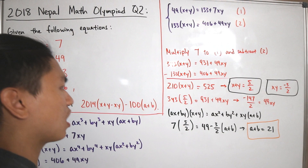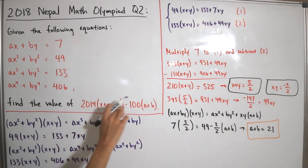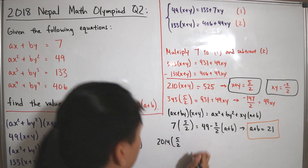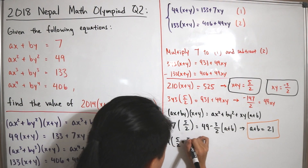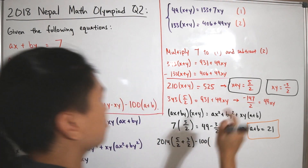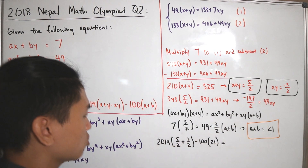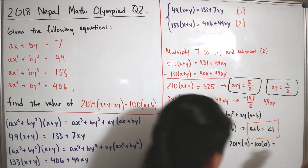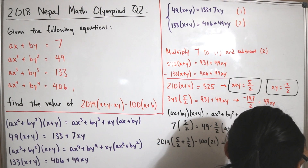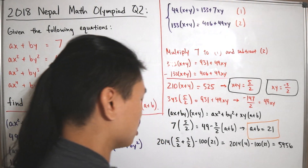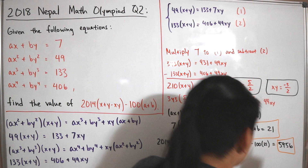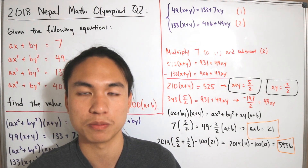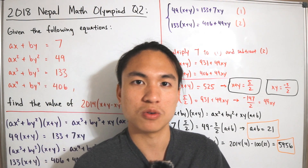Now we have all three values: x + y = 5/2, xy = -3/2, and a + b = 21. Plugging into the expression: 2014(5/2 - (-3/2)) - 100(21) = 2014 × (8/2) - 2100 = 2014 × 4 - 2100 = 8056 - 2100 = 5,956. That concludes the problem — using the creative approach of solving combined variable expressions rather than individual values.